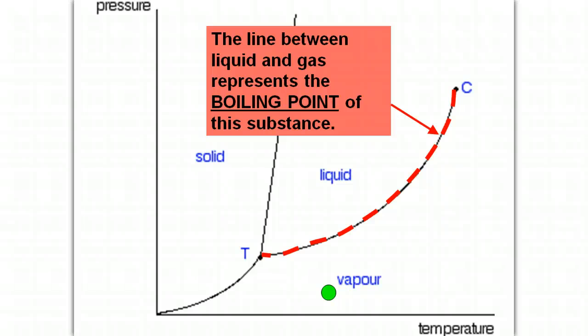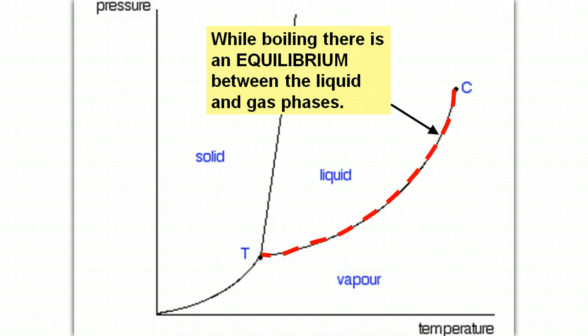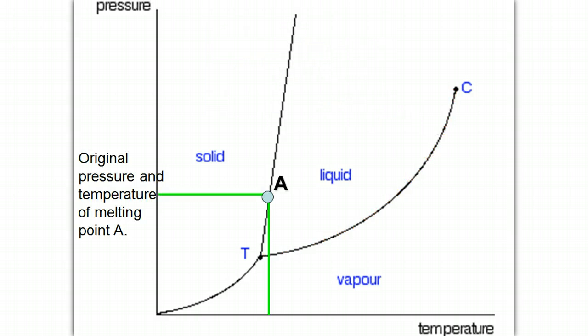The line between liquid and gas represents the boiling point of this substance. So if you land on the line with the temperature and pressure, then this is the point at which the substance is going to go through the phase change of vaporization or boiling. And therefore it's in a state of equilibrium. Liquid and gas phases exist simultaneously.